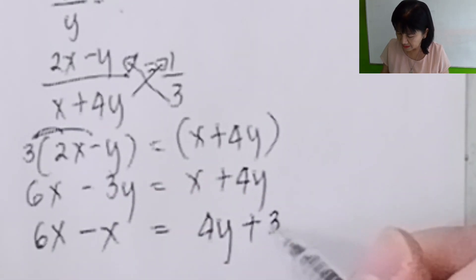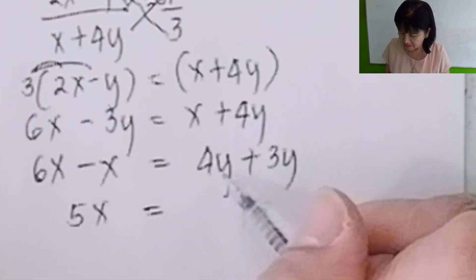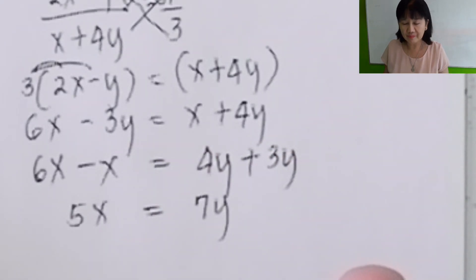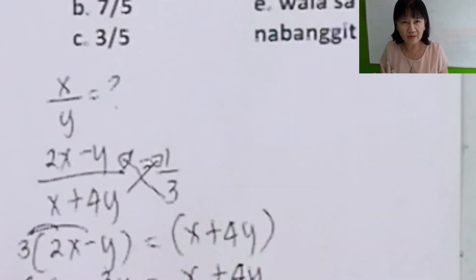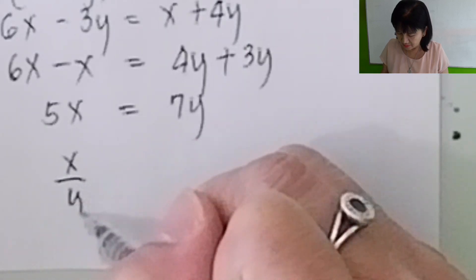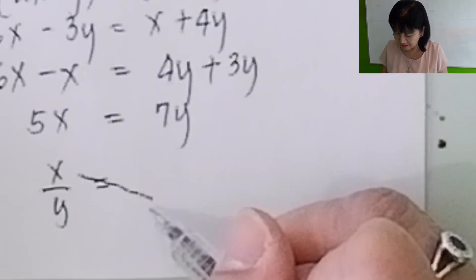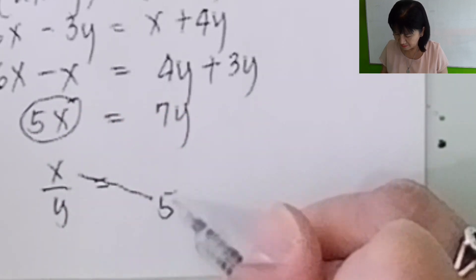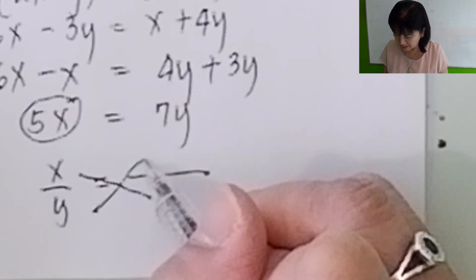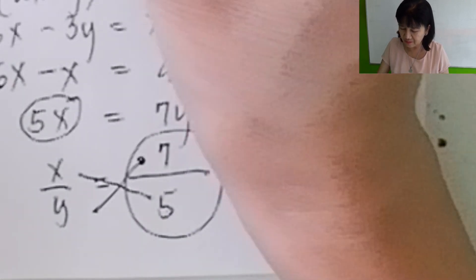Then combine all the x's on one side: 6x minus x, this one goes there so it becomes minus 4y. Transpose negative 3y here, it becomes plus 3y. So you have 5x equals 7y, then stop. Many of you might be tempted to solve for x first and then solve for y and substitute, but no, there is a shortcut. You copy x to y, which is unknown. When you cross it here, what is the number here for you to get 5x? Five. What should be the number here for you to get 7y? Seven. So the answer is x over y is 7 over 5, letter B.